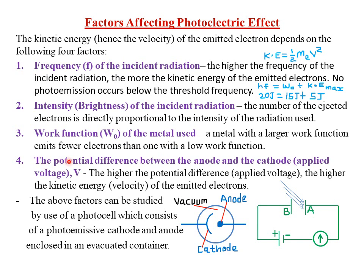The fourth and last factor is the potential difference between the anode and the cathode, or simply the applied voltage V. The higher the potential difference between the anode and cathode, the higher the velocity with which the emitted electrons will be moving, because they are being accelerated by that potential difference. So the higher the potential difference or applied voltage, the higher the kinetic energy, hence the velocity of the emitted electrons.